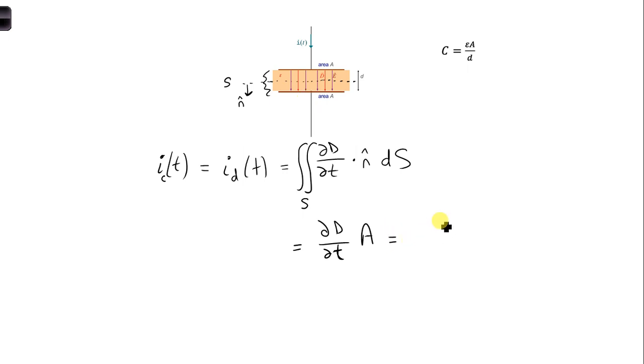And then also, we can relate the D field to the E field using the constitutive relations. So D is equal to ε E. This is a vector quantity with a direction associated with it.